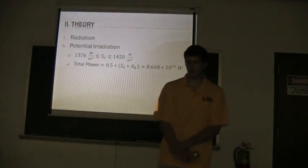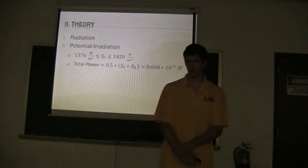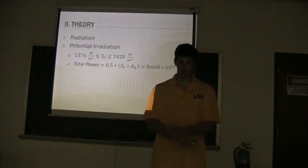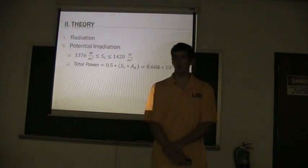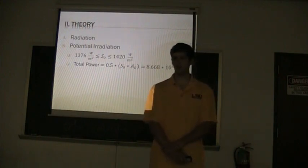The irradiation that comes to the earth, we call this S-knot, it's between 1,376 and 1,420 watts per meter squared depending on the time of year. When we calculate the total power available on the earth's surface, we use about half of this value to account for the scatter and the absorption that happens in the earth's atmosphere.